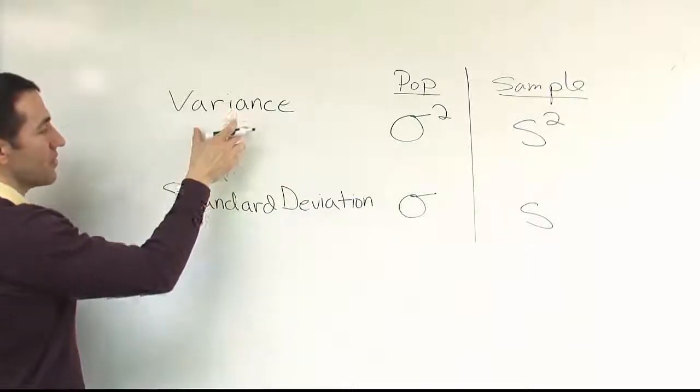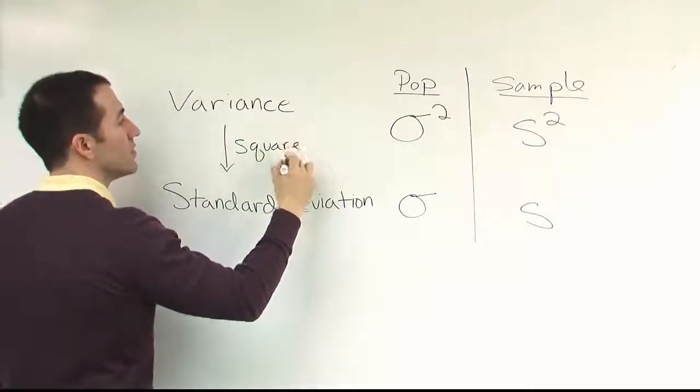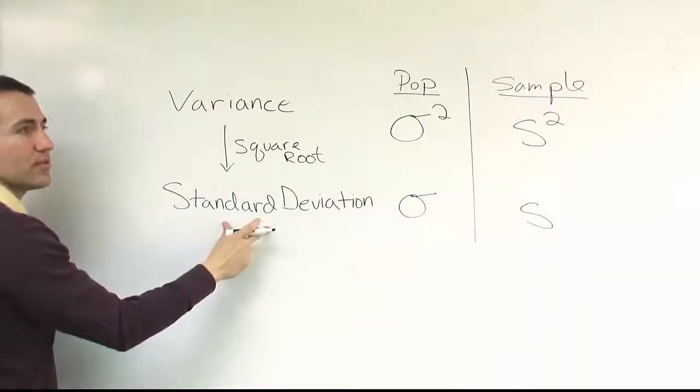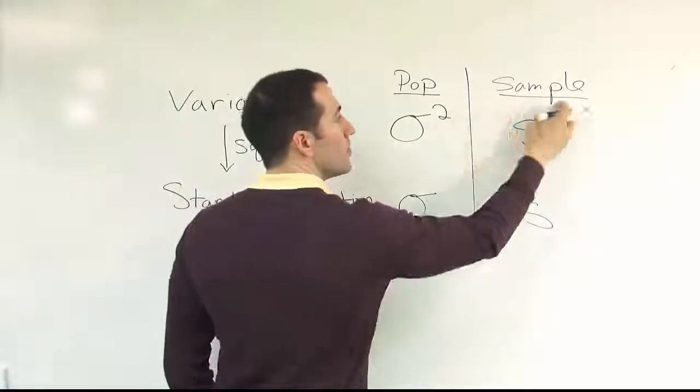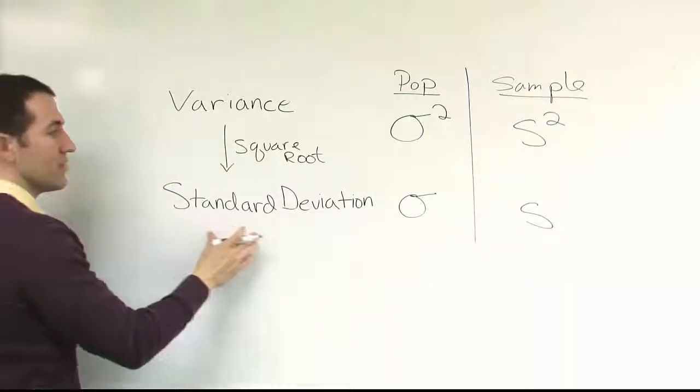And so how do you get from here to here? You take the square root. If you take the square root of the variance, you end up with a standard deviation. Just like if I took the square root of this symbol, I would end up with this symbol. If I take the square root of this symbol, I end up with this symbol. And that captures the relationship between variance and standard deviation.